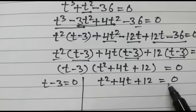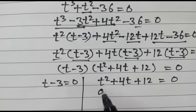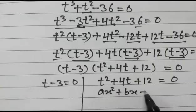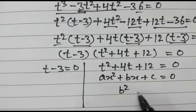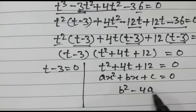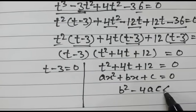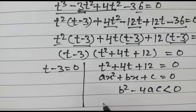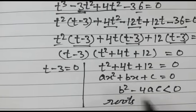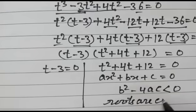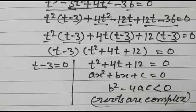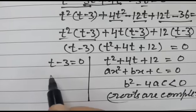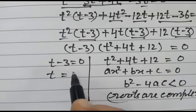This gives us (t minus 3)(t squared plus 4t plus 12) equal to 0. The factor t squared plus 4t plus 12 is a quadratic equation of the form ax squared plus bx plus c equal to 0. Since b squared minus 4ac is less than 0, the roots are complex. We will not take these values. So t is equal to 3.